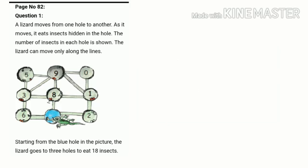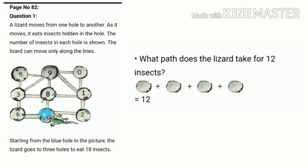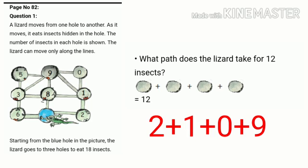Coming to the last question: what path does the lizard take for 12 insects? Here again we have 4 holes. First we had 3 holes; now for 12 insects we use 4 holes. Which path will it take? The lizard will start from 2, then go to 1, 0, and 9. So 2 plus 1 plus 0 plus 9 gives a total of 12 insects.